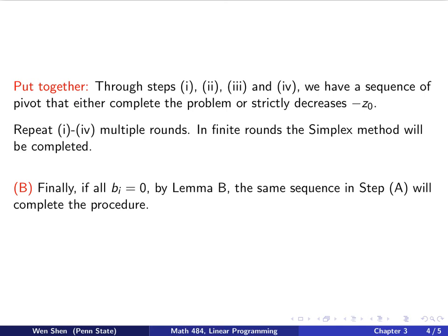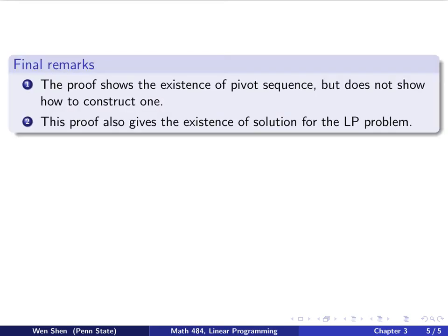Before we stop, let's make some final remarks. We want to say two things. Sometimes, one thing is kind of an annoying thing. The proof we have gone through, it shows that there exists a pivot sequence that will complete the simplest method, but it doesn't tell us exactly how to construct one. This still leaves it open, the possibility of cycling, and it did not discuss the detail of how to deal with cycling.